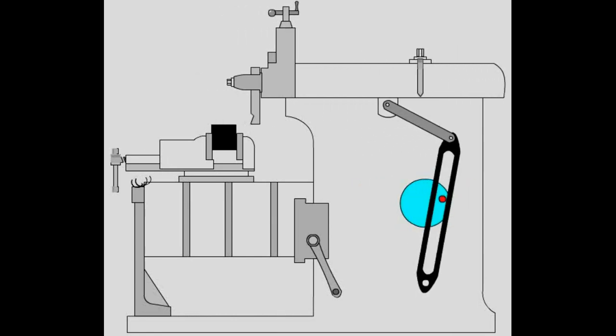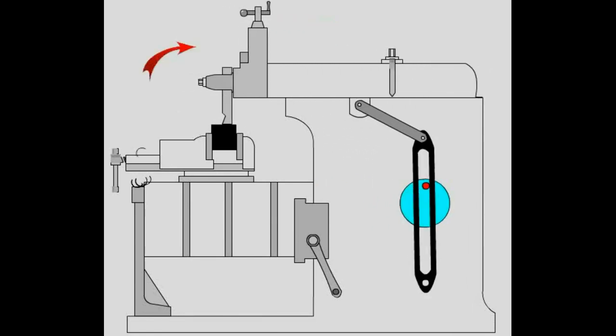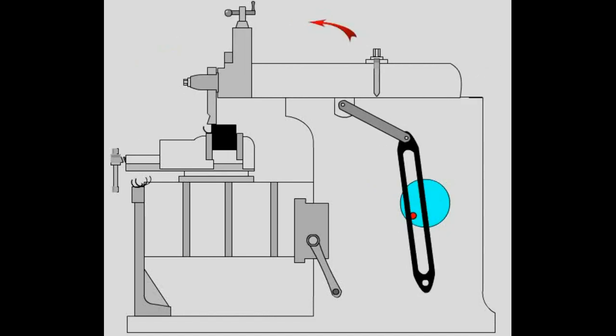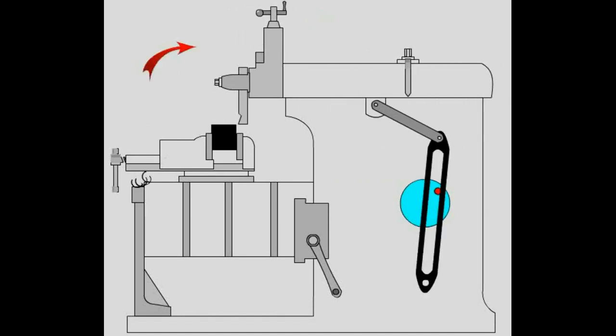This mechanism was used in crank shapers, with the slow part or stroke being used for the working time of a tool and the quick part for the non-productive time.